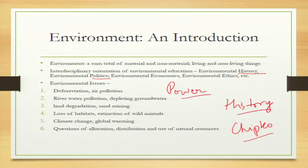These are the issues you often get to know about in newspapers or numerous government reports — for instance, land degradation where the quality of soil is degrading, and sand mining, which is another major issue involving criminalization. There is also the loss of habitats and extinction of wild animals. You must have heard of things like Project Tiger or dolphin conservation — numerous wild animals and flora and fauna are endangered, and we need to save them.